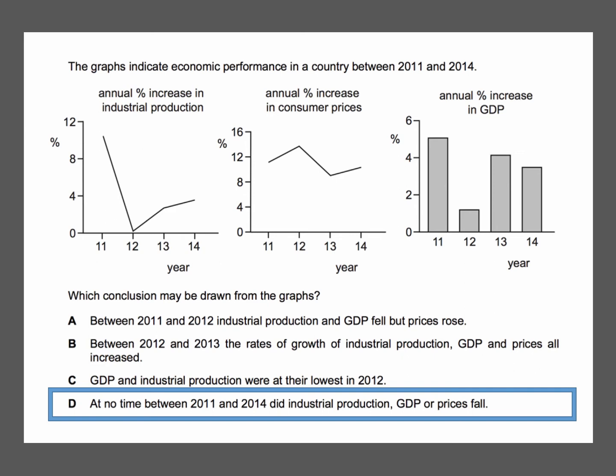The key to getting this right is to look at the y-axis. In each case, we're showing the percentage change — or percentage increase — in production, prices, and GDP. Of course, production could fall, in which case the percentage change would be negative. But in no chart is the percentage level on the y-axis negative.